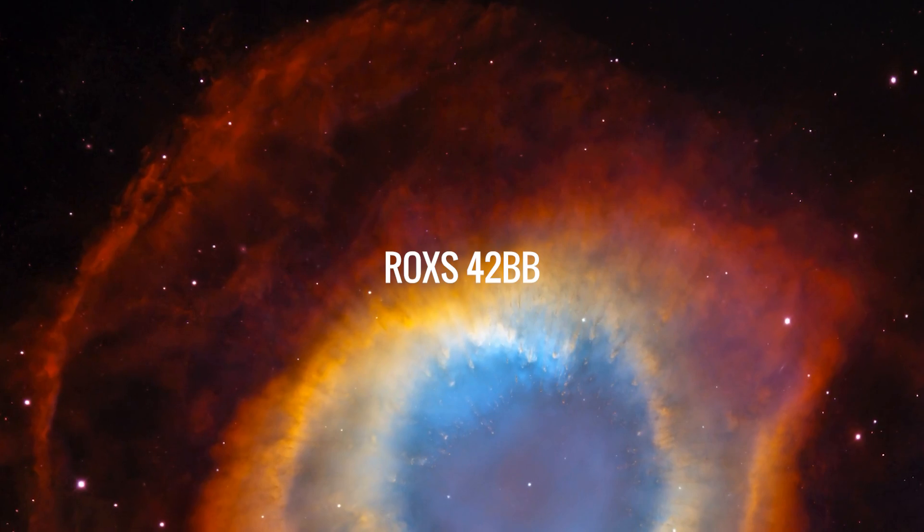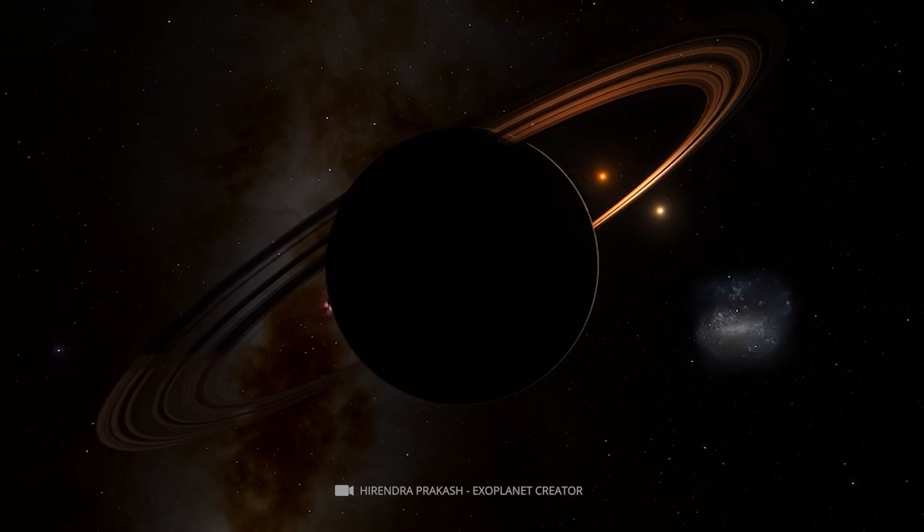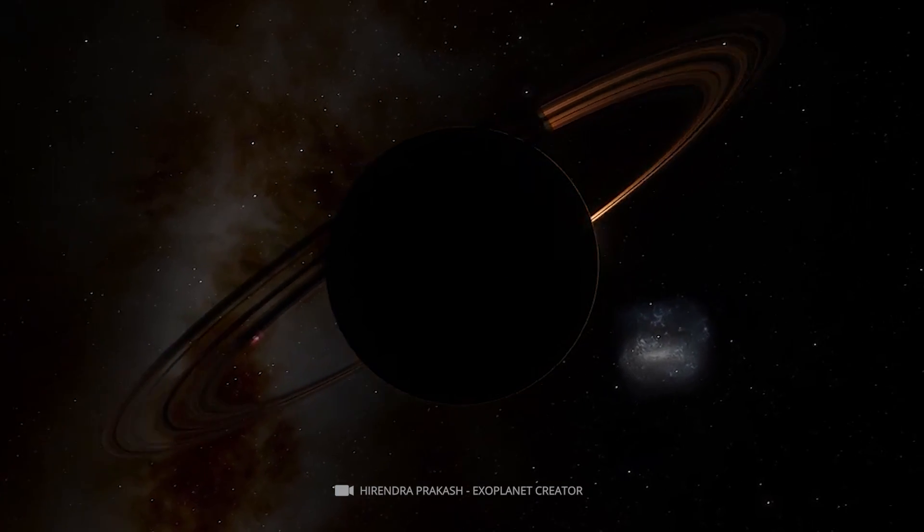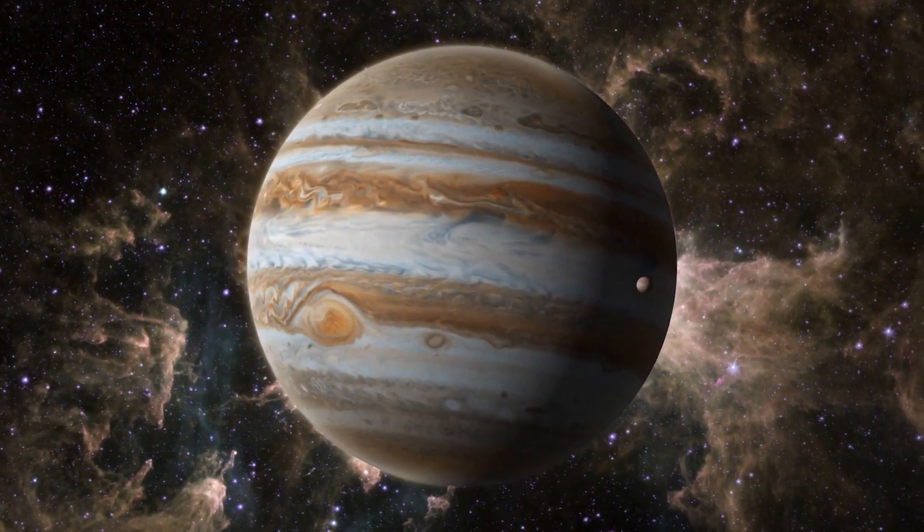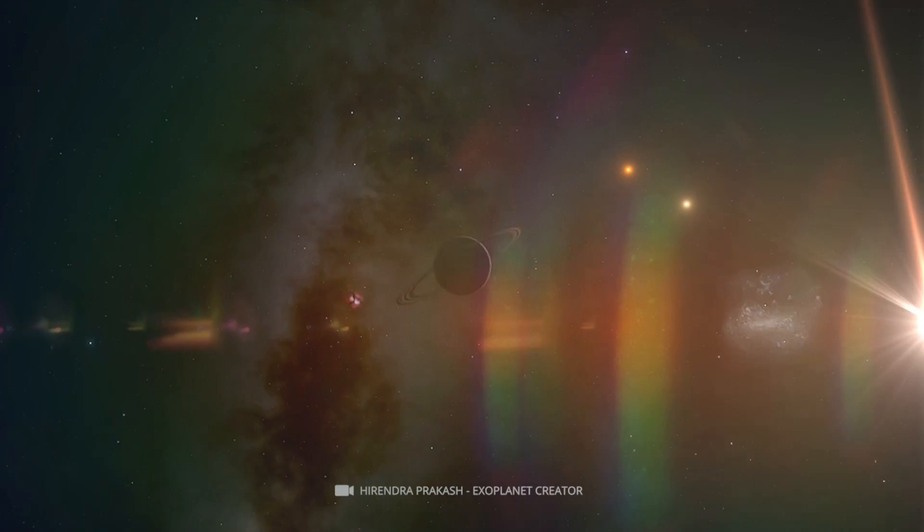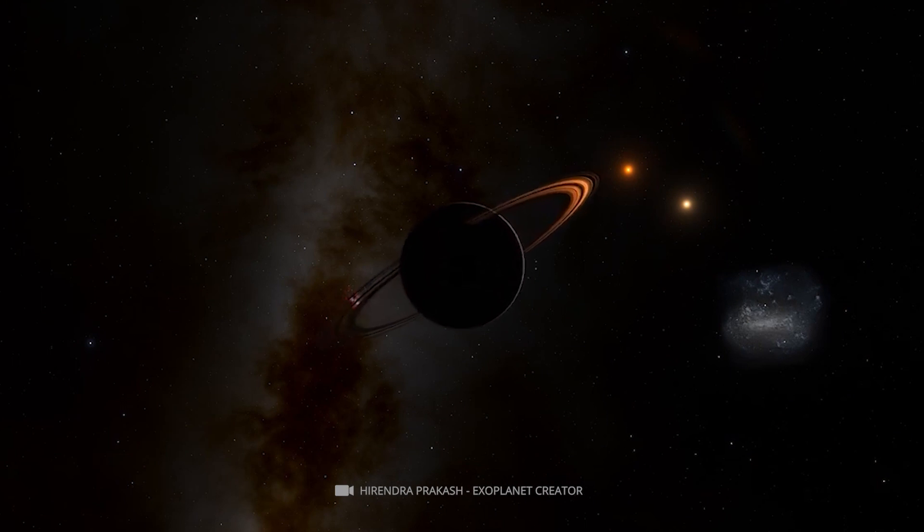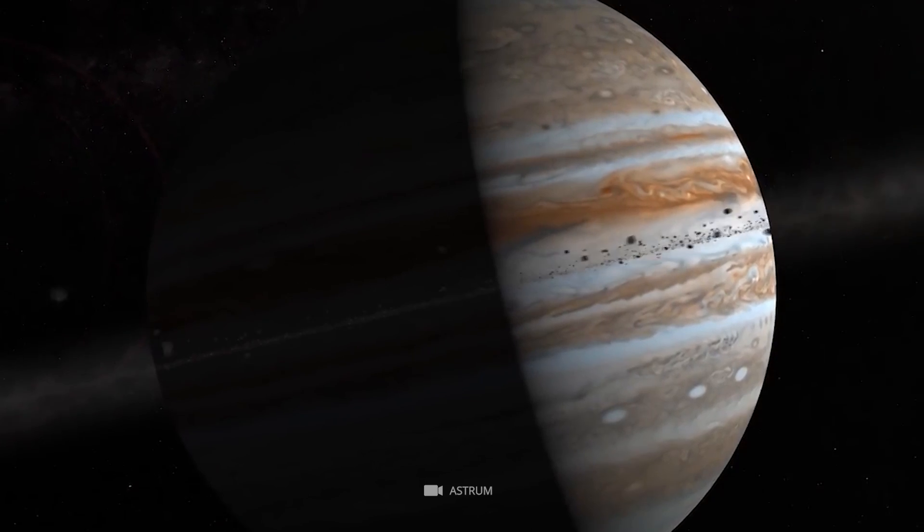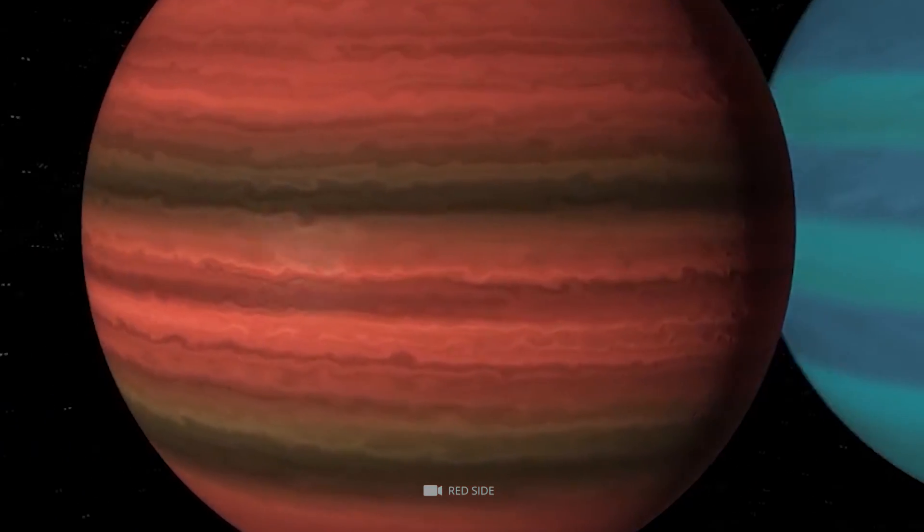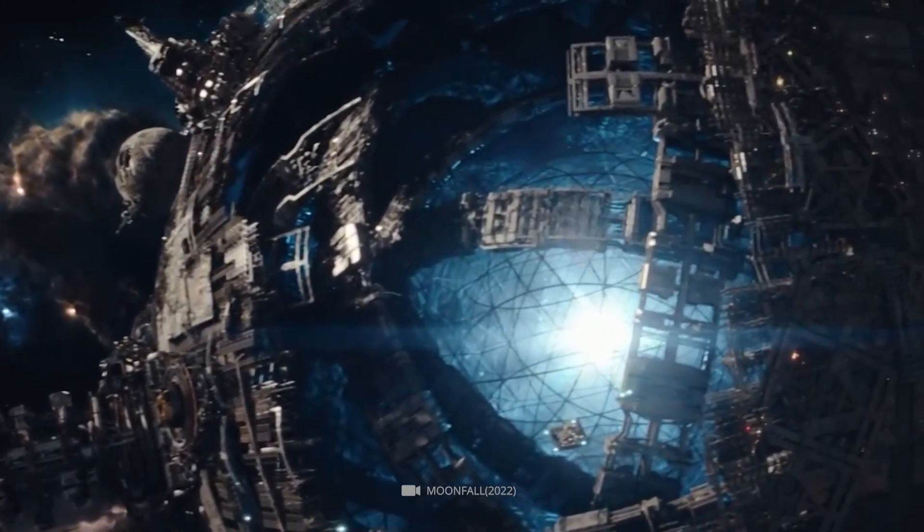ROX 42BB. ROX 42BB is an incredibly massive exoplanet, estimated to be more than 13 times the mass of Jupiter, the giant planet in our solar system. ROX 42BB is estimated to have a radius of approximately 1.75 times that of Jupiter, making it one of the largest exoplanets.